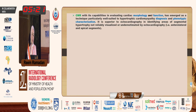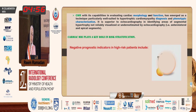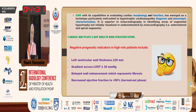CMR, with its capabilities in evaluating cardiac morphology and function, has emerged as a technique to help in diagnosis and phenotypic characterization of HCM. It is superior to echocardiography in identifying areas of segmental hypertrophy not visualized or underestimated by echo, like the anterolateral and apical segments. CMR also plays an important role in risk stratification. High-risk indicators include LV wall thickness exceeding 30 mm, LVOT gradient above 30 mmHg, extensive late gadolinium enhancement representing fibrosis, ejection fraction below 50 percent, and presence of LV apical aneurysm.